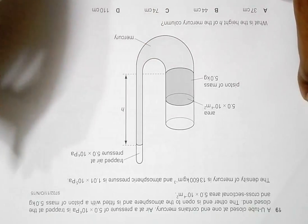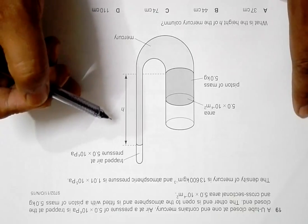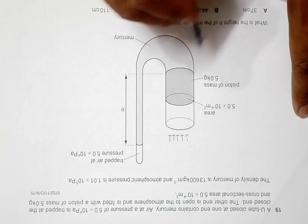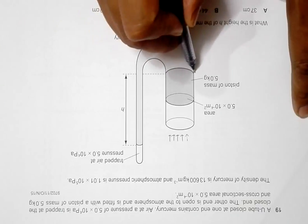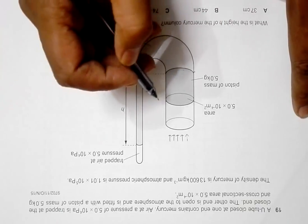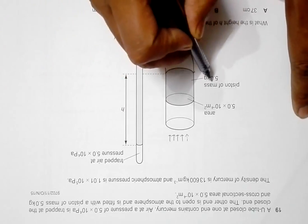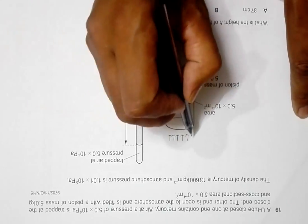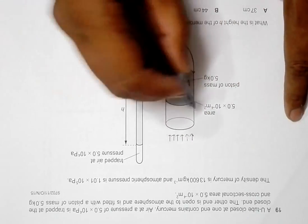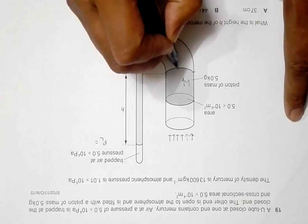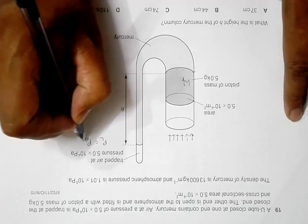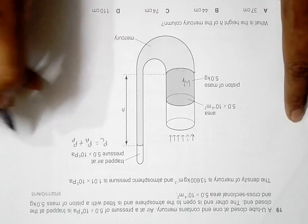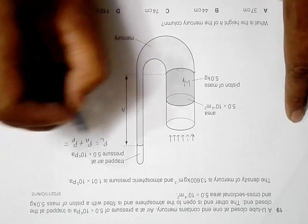At the left column, we consider the forces acting at the level of mercury. The pressure at this level consists of two contributions: the force due to the weight of the piston, and the force due to atmospheric pressure. So the pressure at the left end equals the atmospheric pressure plus the pressure due to the piston.